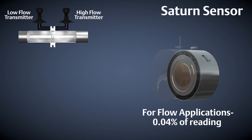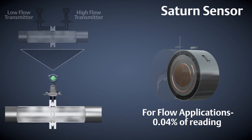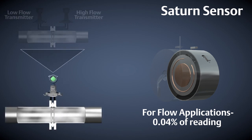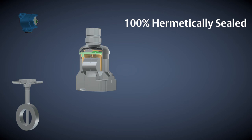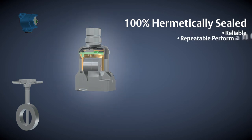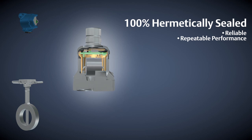For flow applications, an available 0.04% of reading capability allows you more flow turndown coverage with a single transmitter. The supermodule also contains all of the transmitter electronics and is encased in a 100% hermetically sealed enclosure, which provides reliable and repeatable performance in even the harshest of conditions.